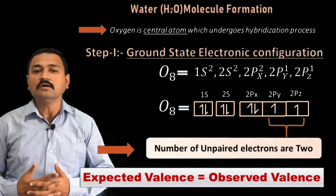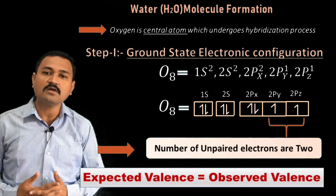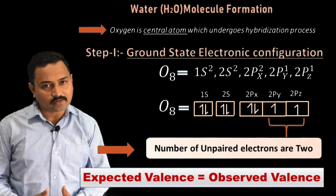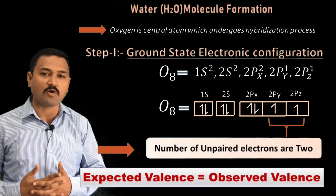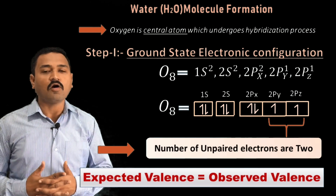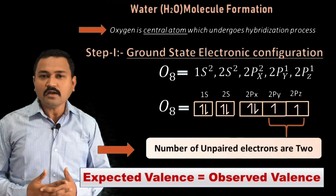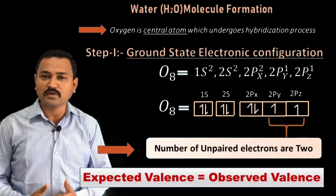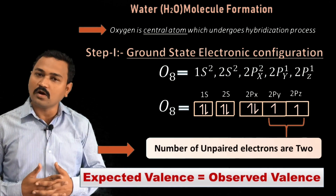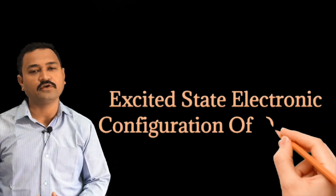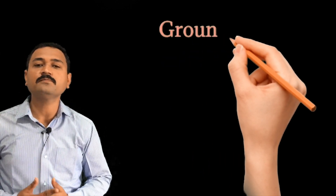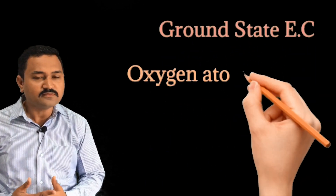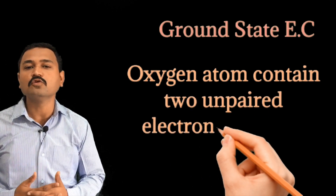To understand this ground state electronic configuration, I have shown it in square box form, where you will observe that the 2py¹ and 2pz¹ atomic orbitals contain two unpaired electrons. Now let us consider the second step, that is the excited state electronic configuration of the oxygen atom.